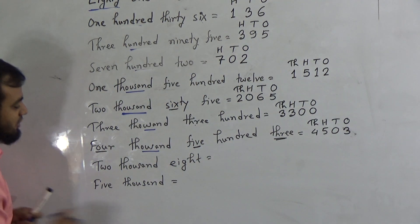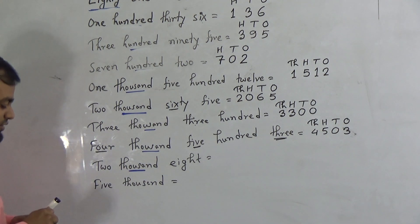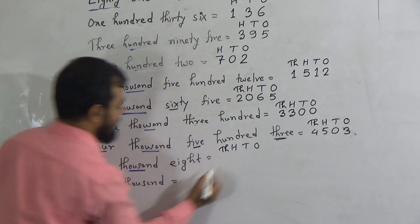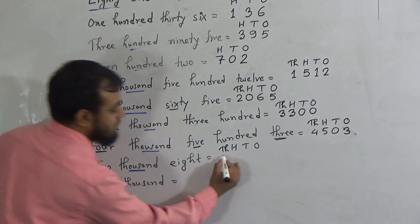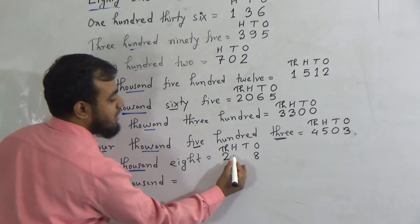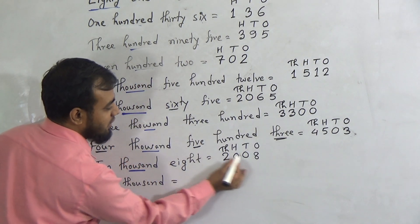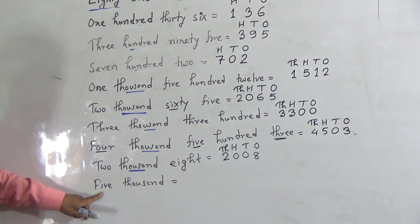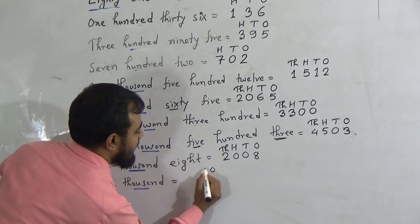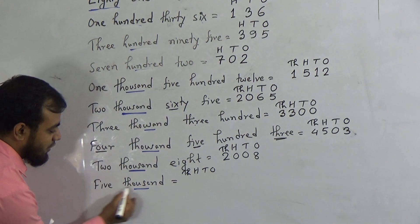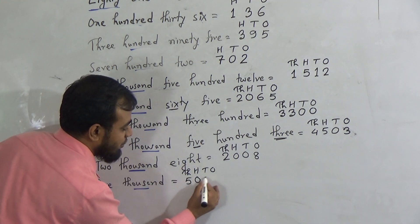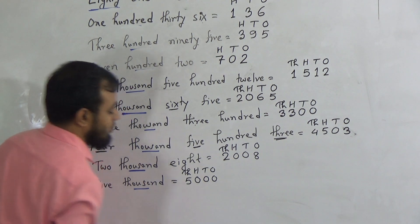The next one is 2008. To write down 2008, we need to take the place value up to 1000s. To write down 2000, we must write down 2 in the 1000s place. To write down 8 only, we must write down 8 in the 1s place. The 100s place and 10s place will be filled up with the digit 0. This means 2008. Now the last number is 5000. To write down 5000, we must write down 5 in the 1000s place, and the other place values will be filled up with the digit 0. So 5 and 000 makes the number 5000.